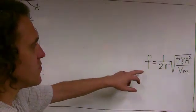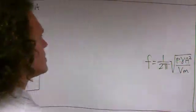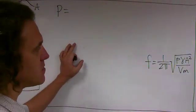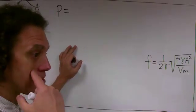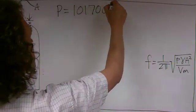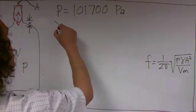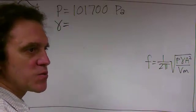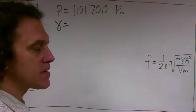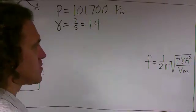To calculate the predicted frequency for the tone in the bottle, we have to first find all these variables. The pressure is about 30.04 inches of mercury right now, which is about 101,700 pascals. γ, the adiabatic index - air is pretty well a diatomic gas, mostly oxygen and nitrogen. For a diatomic gas, the adiabatic index is 7/5, which is 1.4.